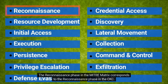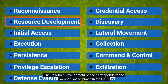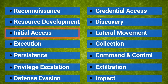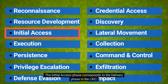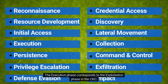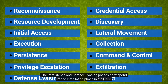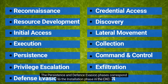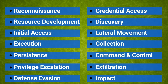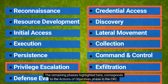The reconnaissance phase in the MITRE ATT&CK matrix corresponds to the reconnaissance phase in the CKC. The resource development phase corresponds to the weaponization phase in the CKC. The initial access phase corresponds to the delivery phase in the CKC. The execution phase corresponds to the exploitation phase in the CKC. The persistence and defense evasion phases correspond to the installation phase in the CKC. The command and control phase is the same as in the Cyber Kill Chain. The remaining phases correspond to the actions on objectives phase in the CKC.